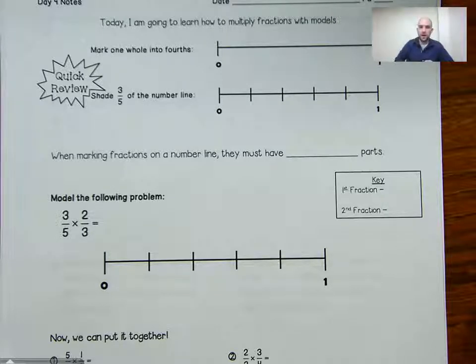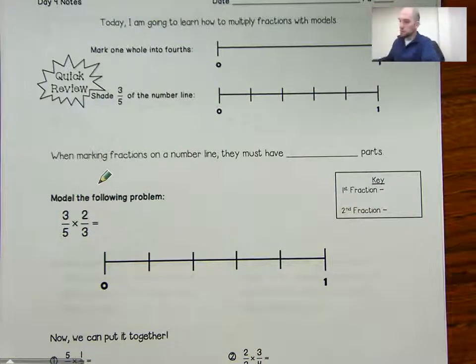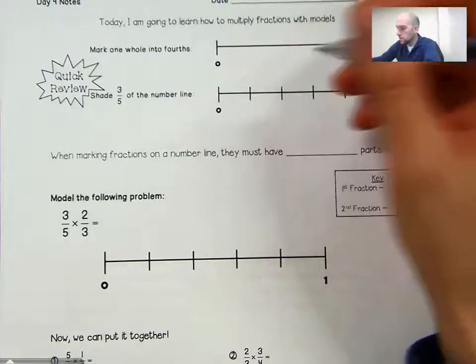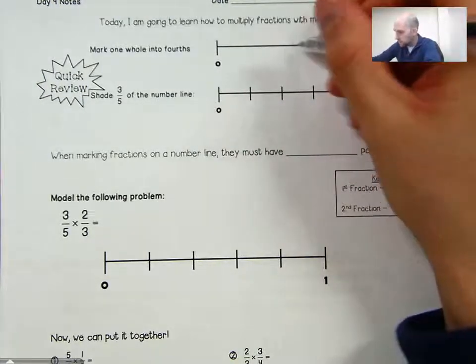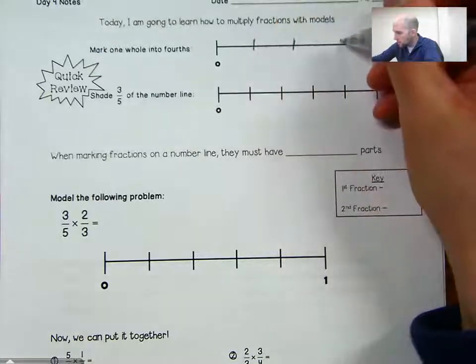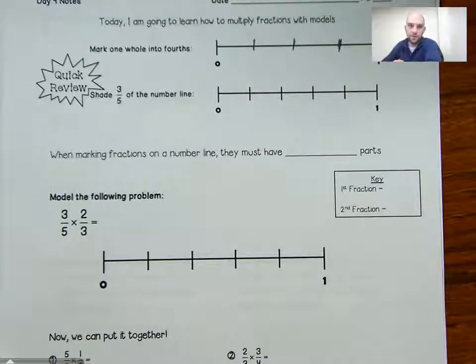Today we're going to learn how to multiply fractions with models, but we're going to use a number line this time. Let's mark one whole into fourths. We're going to make this number line into fourths — cut it in half and then cut the halves in half, and we have it broken into fourths.